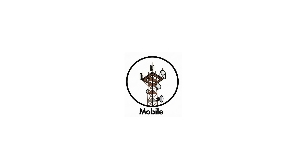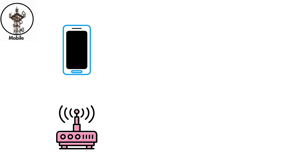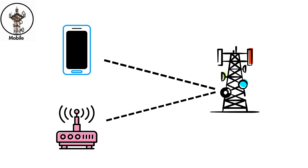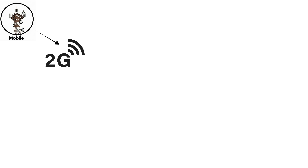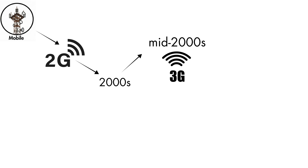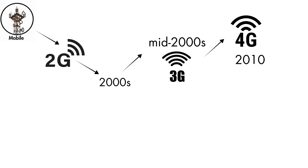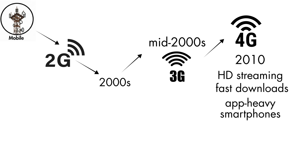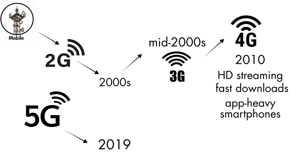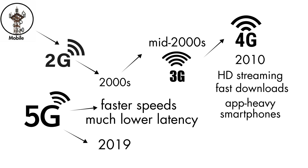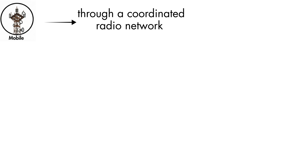Mobile internet — cellular network — is the technology that lets phones and hotspots get online through cell towers instead of cables. It began with early 2G data in the early 2000s, slow but groundbreaking. By the mid-2000s, 3G made everyday browsing practical. Then 4G LTE arrived around 2010 and completely changed mobile use, making HD streaming, fast downloads, and app-heavy smartphones feel normal. Today's 5G networks, first introduced in 2019, push performance even further with faster speeds and much lower latency.